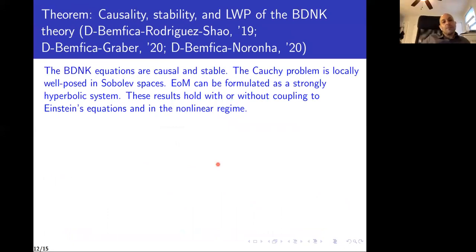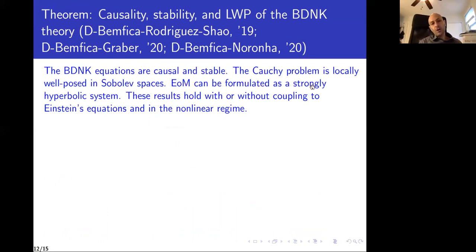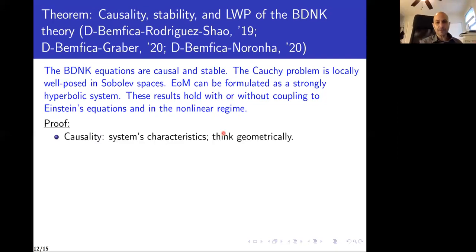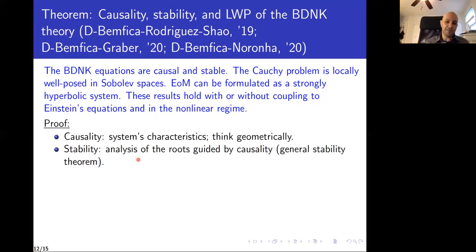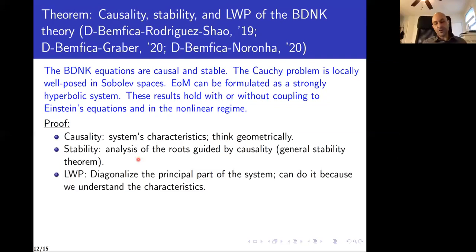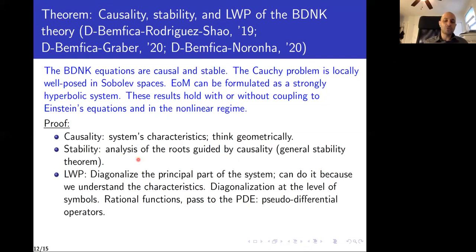The BDNK equations are causal and stable. The Cauchy problem is locally well-posed in Sobolev spaces. The equations of motion can be formulated as a strongly hyperbolic system. All these results hold with or without coupling to Einstein equations, and again I emphasize these are results for the full nonlinear theory. The causality part is similar to what we did for Israel-Stewart — you have to think geometrically. Stability is more complicated, but we use a general stability theorem proved in the paper. Local well-posedness requires dealing with typical technicalities of quasi-linear equations using the calculus of pseudo-differential operators.